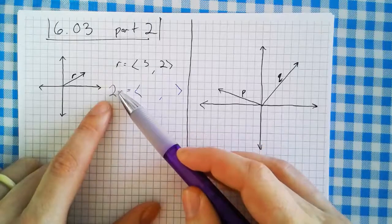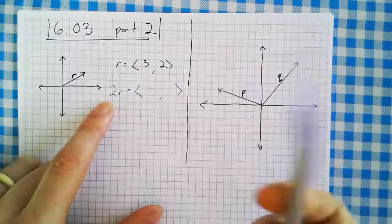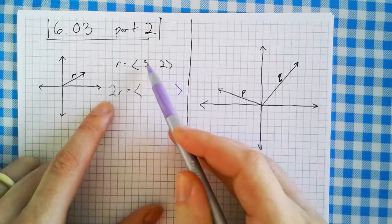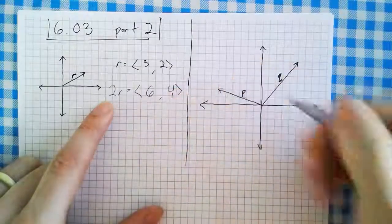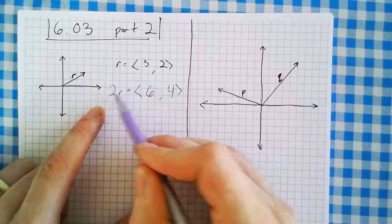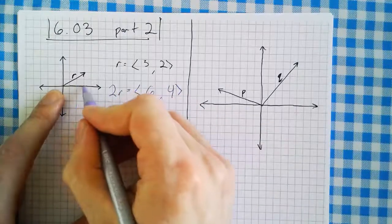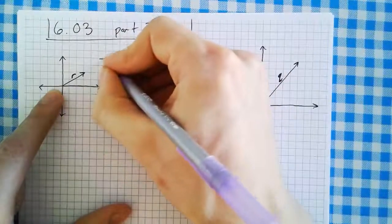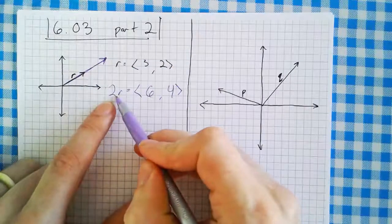What would happen if I multiplied that vector by 2? This 2 is called a scalar — you'll see why in a second. Multiplying by 2 means taking each component and multiplying them by 2. So 2 times the x component gives me positive 6, and 2 times the y component gives me positive 4. This new vector 2r has an x component of 6 and a y component of 4, so it ends at (6, 4) starting from the origin.